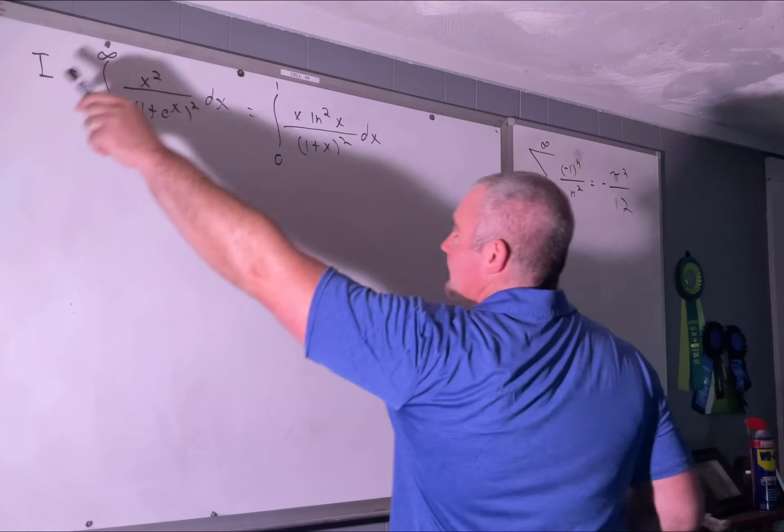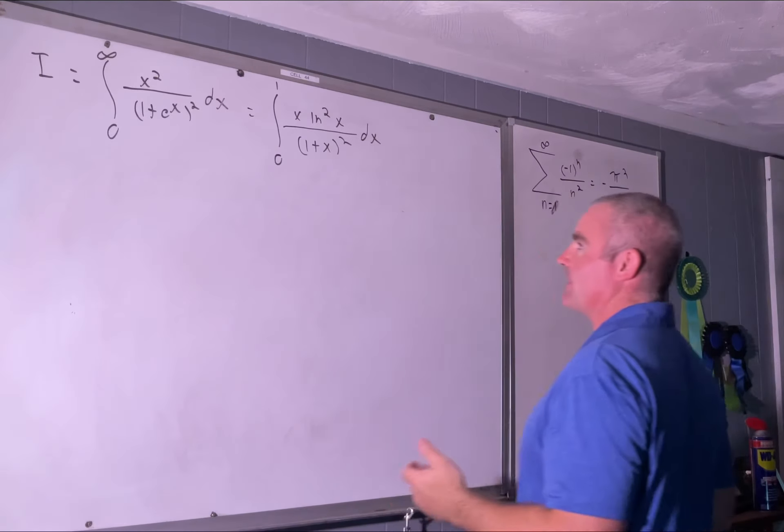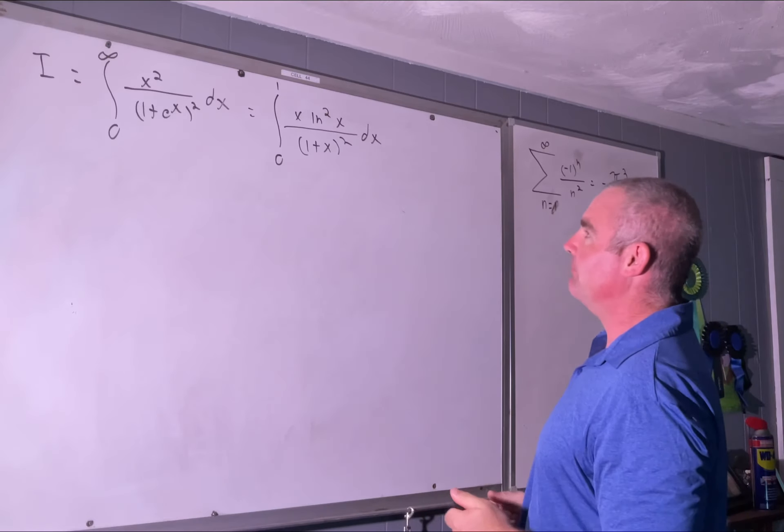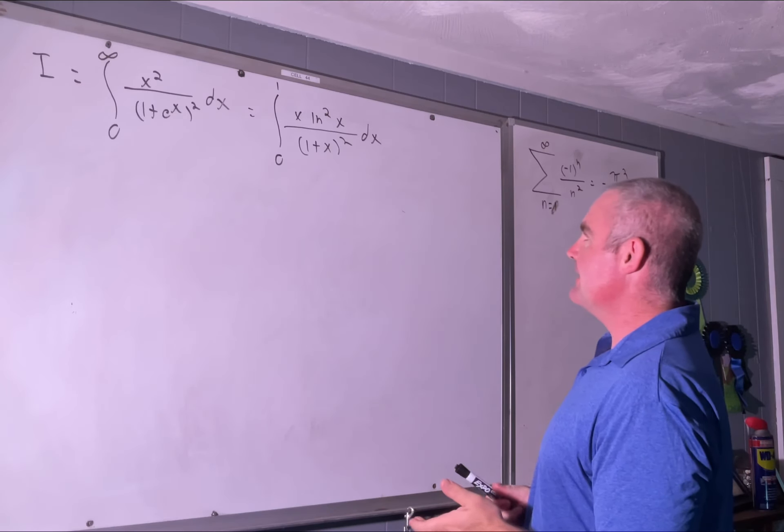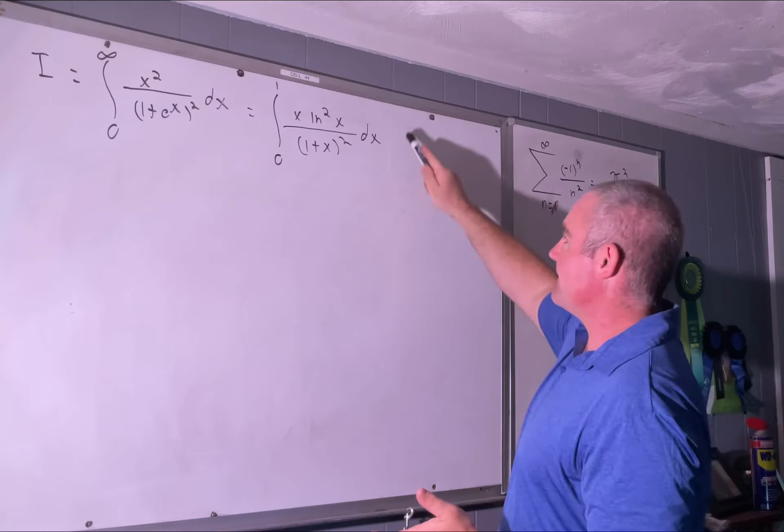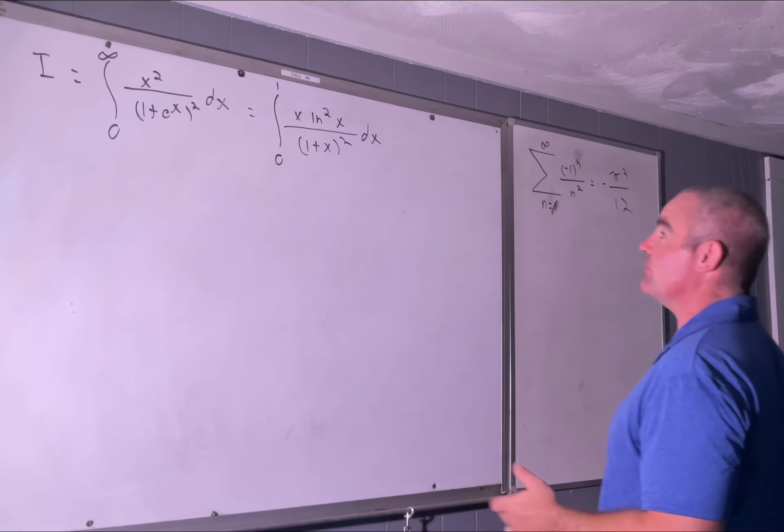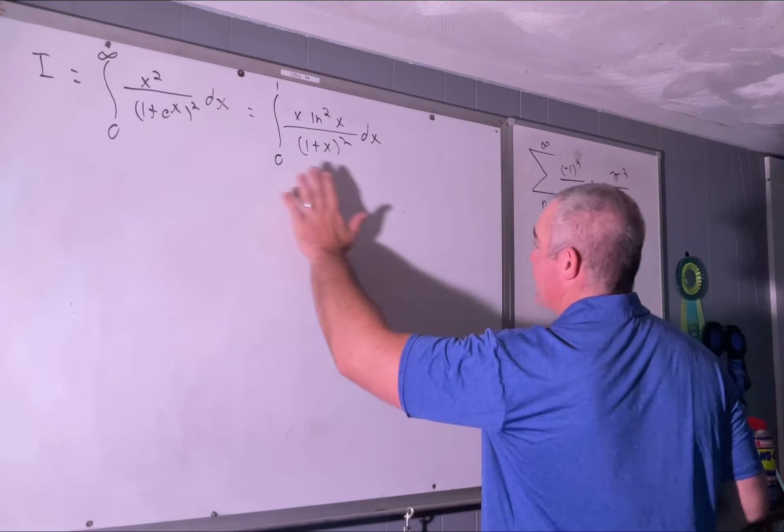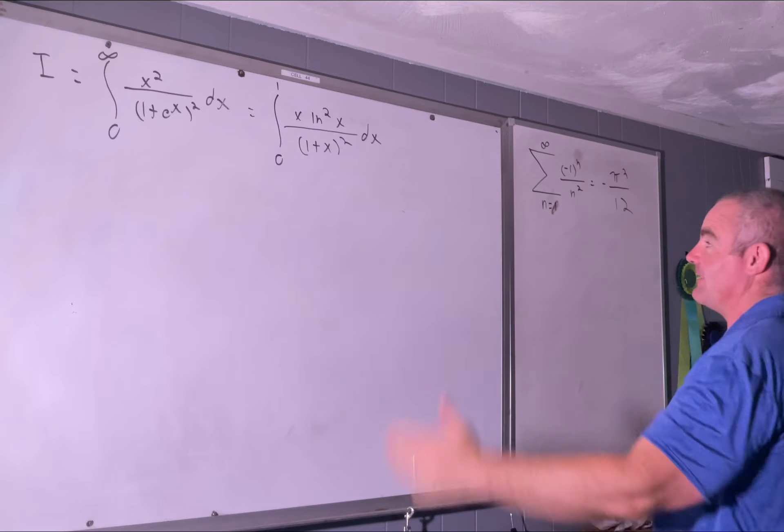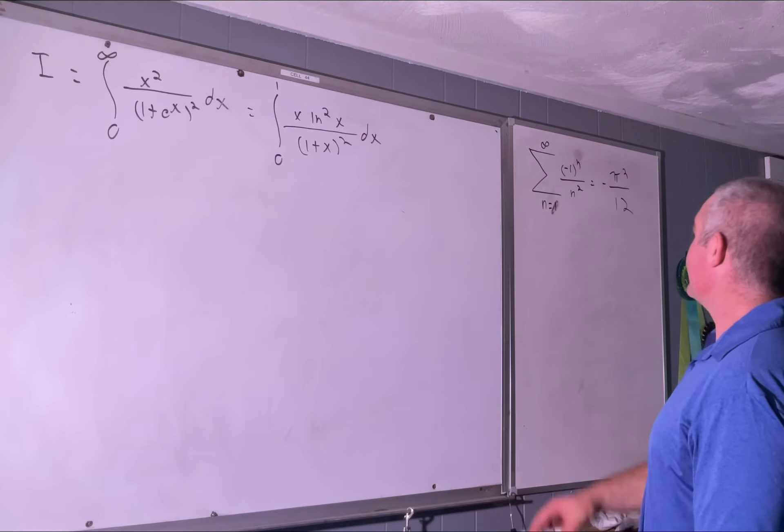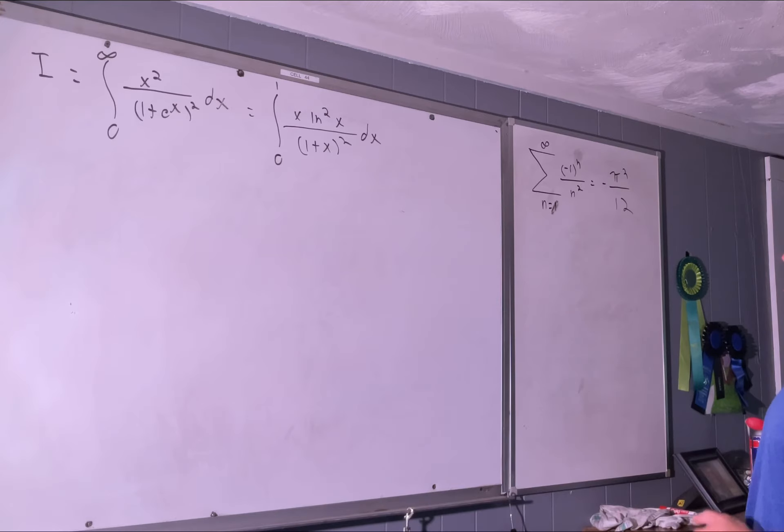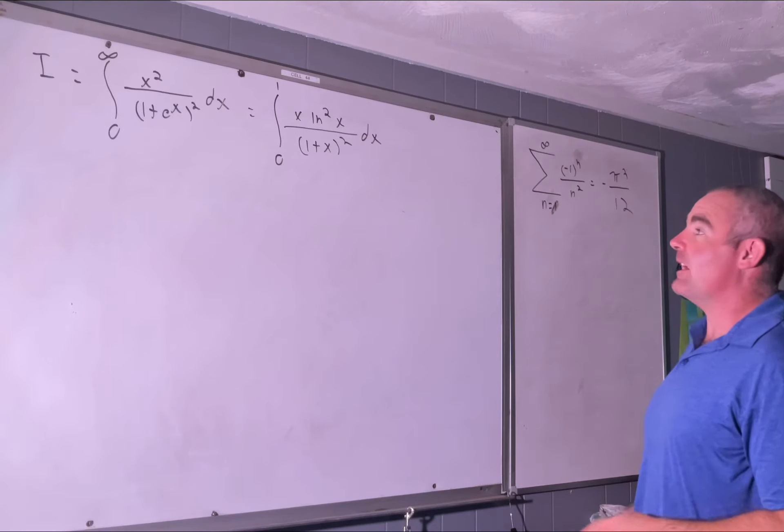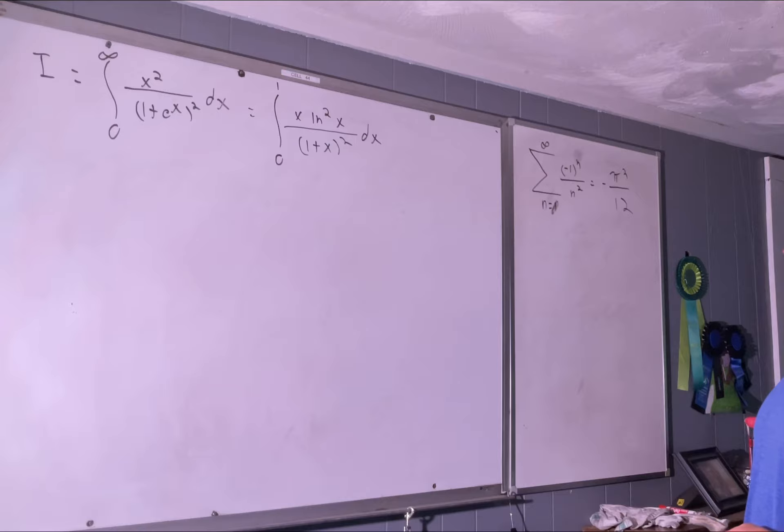All right, so this is the integral we're trying to solve. We'll be using Feynman integration, and we're just gonna jump right to this. I don't think any of you would have a problem going from here to here, so I'm just gonna state it explicitly. We're also going to be incorporating the alternating sum of the reciprocals of the squares, which equals negative pi squared over 12. So let's get started.